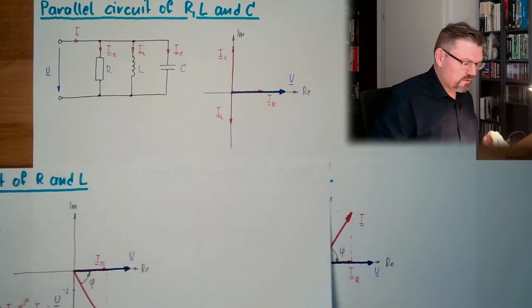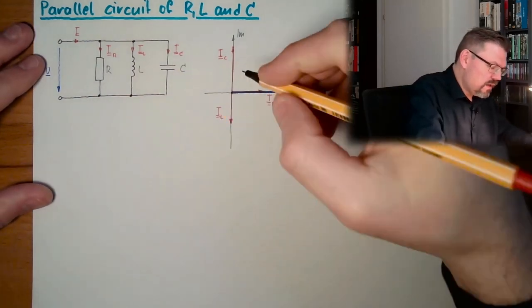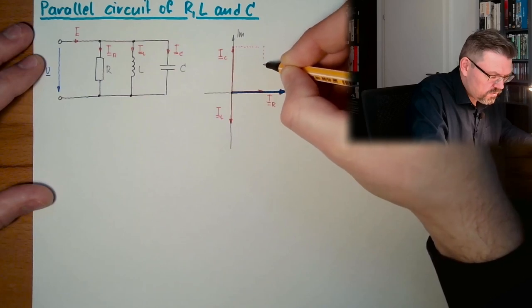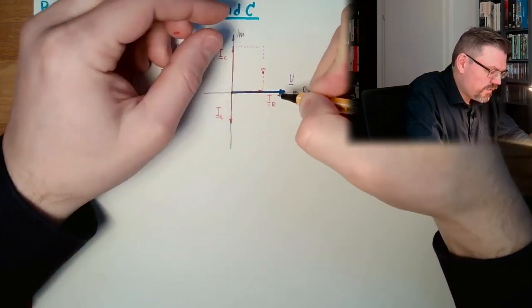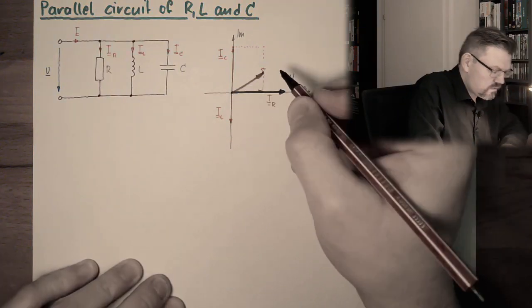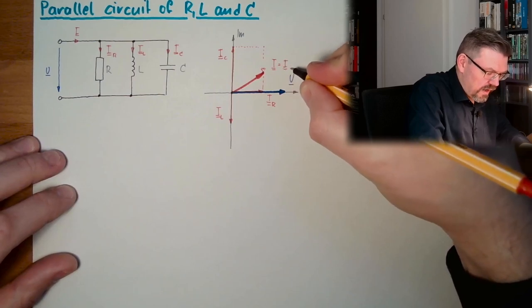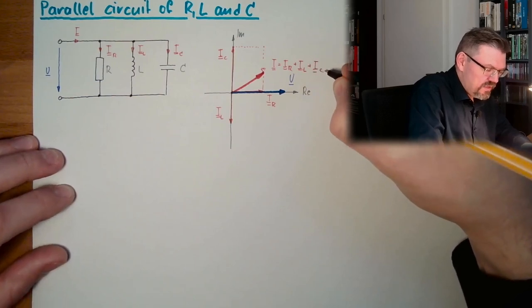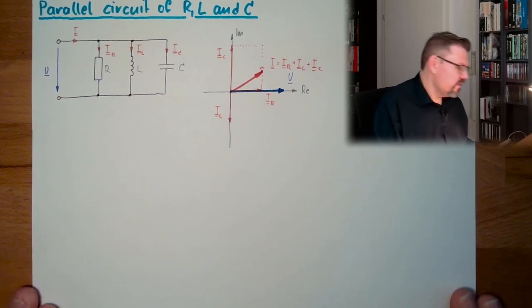This is what we found out. Now, what is my I? I have to summarize all the values, so I'm going up here, and then I'm going down here. I'm ending up here, and this here is my I, which equals IR plus IL plus IC.